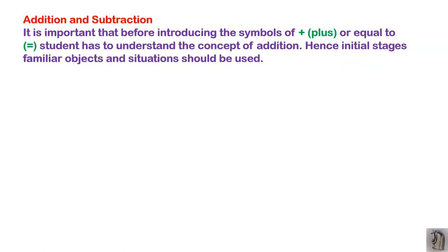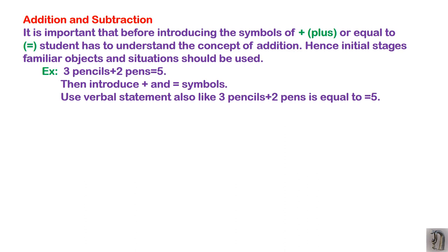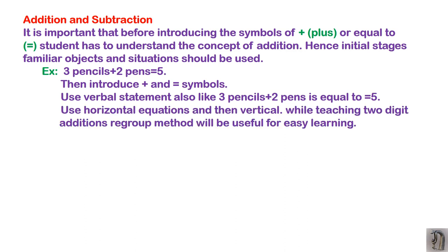In addition and subtraction, before introducing symbols like the plus sign and equal sign, make the child understand the concept first. For example: three pencils and two pens equals five — then introduce the symbols. Use a verbal statement like 'three pencils plus two pens equals five.' A horizontal equation can be used rather than a vertical one, as it supports better visualization when going left to right.